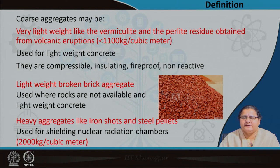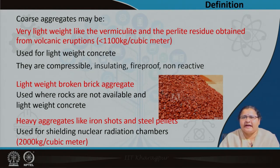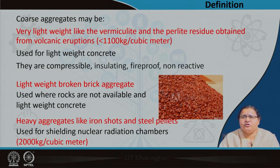Similar to the lightweight varieties, we have another end on the higher side — heavy aggregates which are usually iron shots and steel pellets. These are used for shielding nuclear reaction radiations. Wherever a nuclear reactor is being constructed, you may use such kind of aggregates. Their density is obviously higher — around 2000 kg per cubic meter. So not only stone, but we have so many other things that can be used as coarse aggregates.